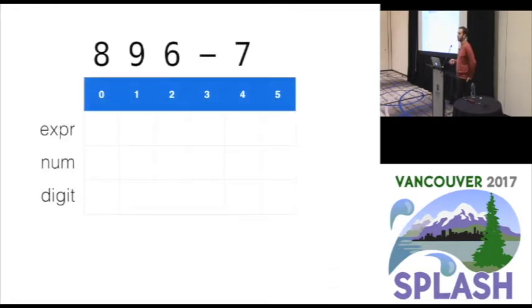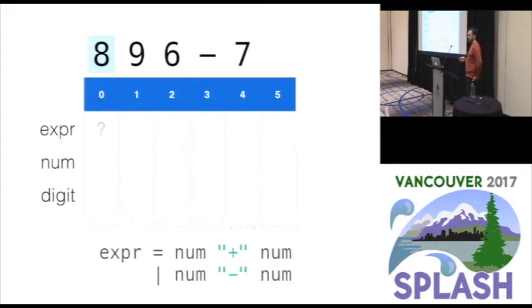So the key data structure of packrat parsing is something that we call the memo table. You can think of this as basically a big matrix. So you have one column for every input position. Actually one more column than you have input positions typically. And you have a row for every rule in your grammar.